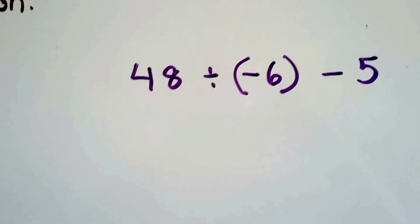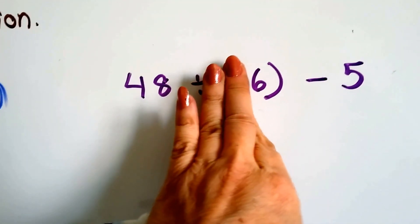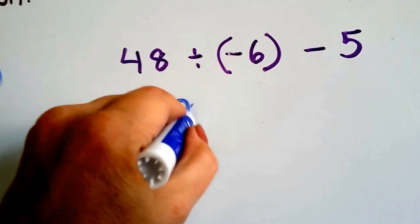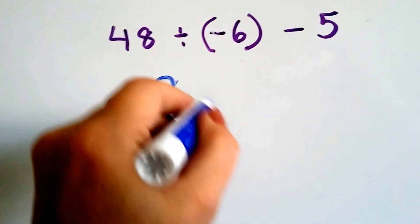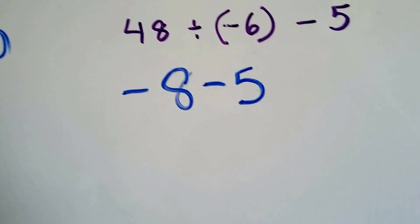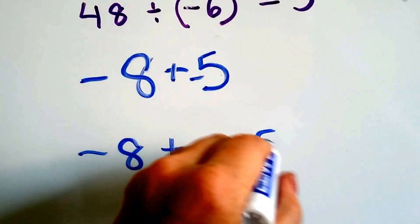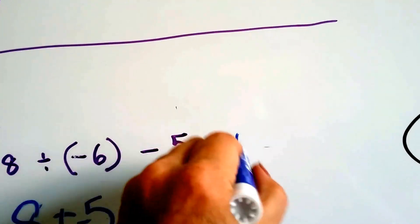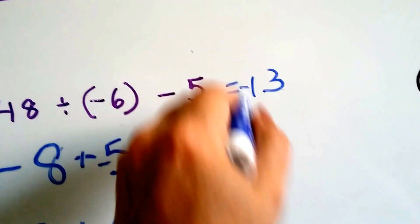48 divided by negative 6 minus 5. We're going to do the absolute value: 48 divided by 6 is 8. This is a positive 48 and a negative 6 — unlike signs — so it's a negative 8. Now we need to take away the 5. We're subtracting — that turns into a plus and that turns into a minus — so we get negative 8 plus negative 5. Because the signs are the same, we just add them: it equals 13. We take the sign — both negative — so it's negative 13.